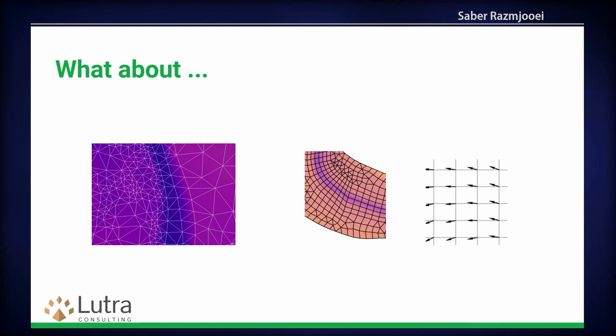Mesh can be a triangular mesh, a quad mesh, or any dimension. In addition to the data inside or at the vertices of the mesh, you might have extra information like vectorial information. If you think of velocity from weather data, you define the direction and the magnitude, so you can have this kind of data inside the mesh as well. And to make it more complicated, you also have a time dimension, so this data repeats and changes for each time step.